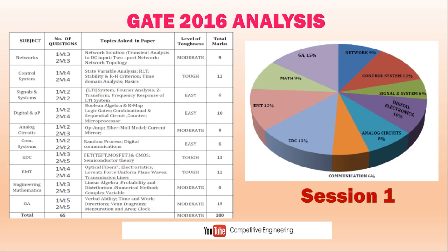So we are going directly to the session-wise analysis — Session 1. On the left side you can find the subject, then total number of questions: 1M means 1-mark question, 2M means 2-mark question. Then topics asked in the paper, level of toughness, and total marks. Control system: 12 marks; Digital and Microprocessor: 10 marks; EDC: 13 marks; EMT: 12 marks.